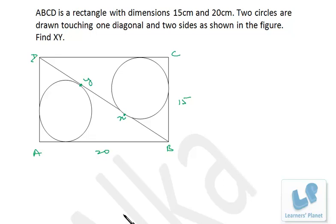Let's see this problem here. ABCD is a rectangle with dimensions 15 and 20. Two circles are drawn touching one diagonal and two sides as shown in the figure. We have to find out XY, that means the distance between their touching point with this diagonal.